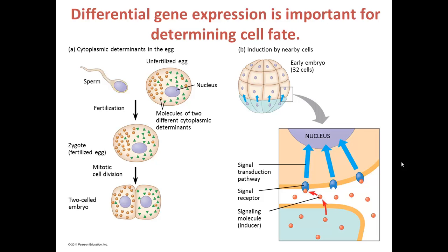One of the major functions of gene expression is to determine cell fate. A sperm and an unfertilized egg come together to form the zygote, the fertilized egg. This fertilized egg will eventually split into two separate cells, and at the very earliest stage we already have differential gene expression in those two cells, because there are different cytoplasmic determinants split between them. This is very important for development of the body axes and for the cellular movements that form later tissue types.